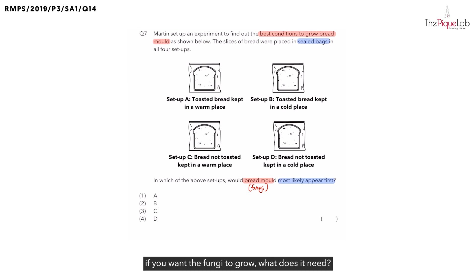And think about this, if you want the fungi to grow, what does it need? It must need water, oxygen and warmth. So let's write this out. If you want the bread mold to appear first, it needs water, oxygen and warmth. So what's an easy way to remember this? Just remember the word WOW. So W stands for water, O is oxygen and the last W is warmth.